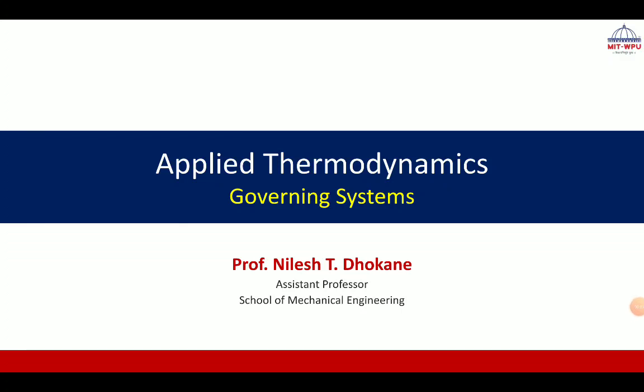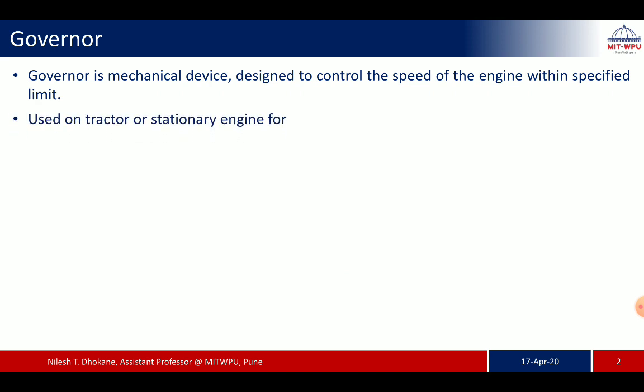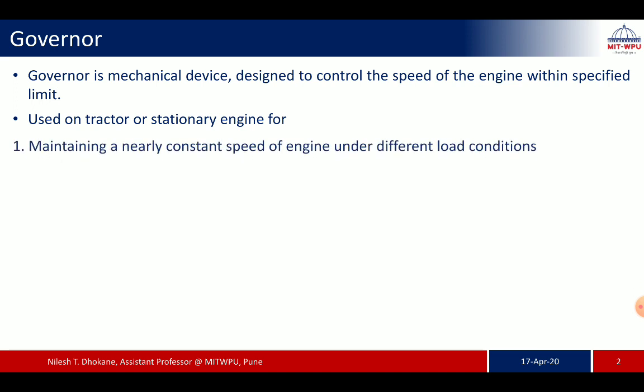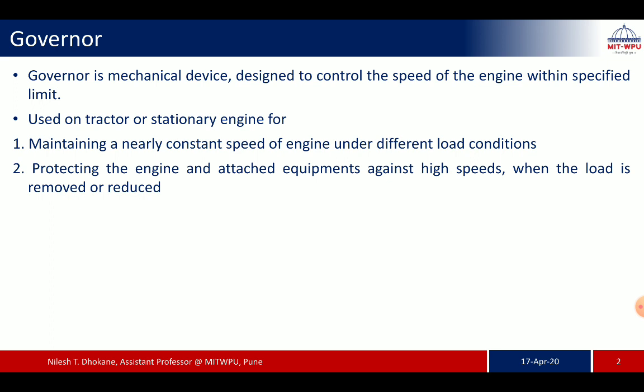Today we'll see the governing systems used for IC engines. A governor is a mechanical device designed to control the speed of an engine within a specified limit. Governors are used in stationary engines and some tractors for maintaining a nearly constant speed under different load conditions like no load, full load, or partial load, and for protecting the engine and attached equipment.